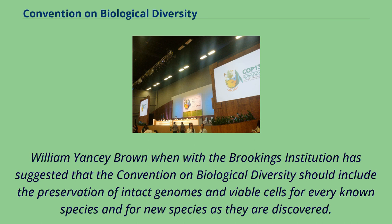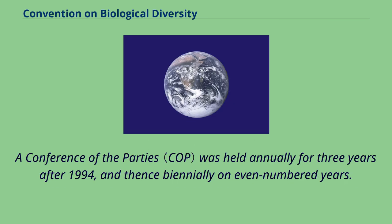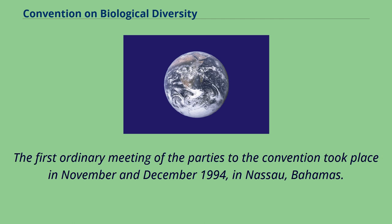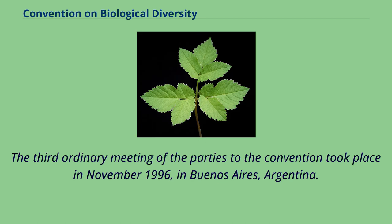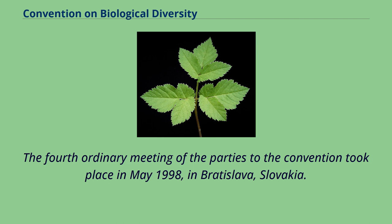A Conference of the Parties was held annually for three years after 1994, and thence biannually on even-numbered years. The first ordinary meeting took place in November–December 1994 in Nassau, Bahamas. The second took place in November 1995 in Jakarta, Indonesia. The third took place in November 1996 in Buenos Aires, Argentina. The fourth took place in May 1998 in Bratislava, Slovakia.